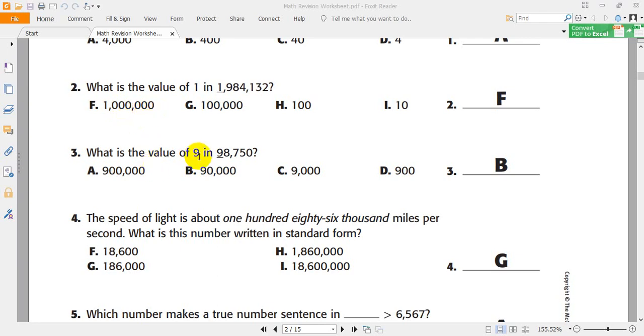What is the value of 9 here? Could you read the number? Then you can get the digit. 98,750. 98,000. So, we have 90,000. 90,000 will be the right answer here. Let's choose B.